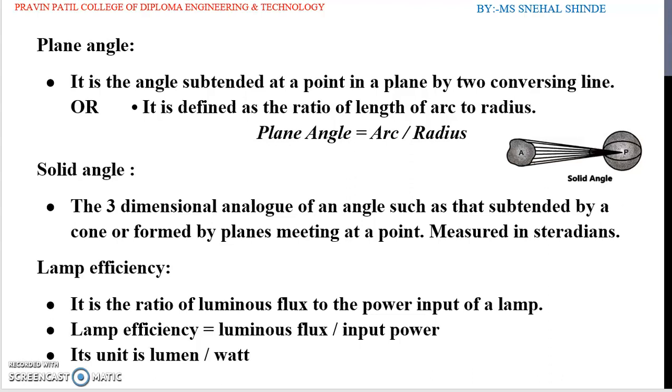Next definition is plane angle. It is subtended at a point in a plane by two conversing lines or it is defined as the ratio of length of arc to the radius and plane angle formula is arc divided by radius. Plane angle is subtended at a point and it is enclosed by two straight lines lying in the same plane. It is expressed in degrees or radians. One radian is the angle subtended by an arc of a circle whose length is equal to the radius of that circle. Two pi radian equal to 360 degree.